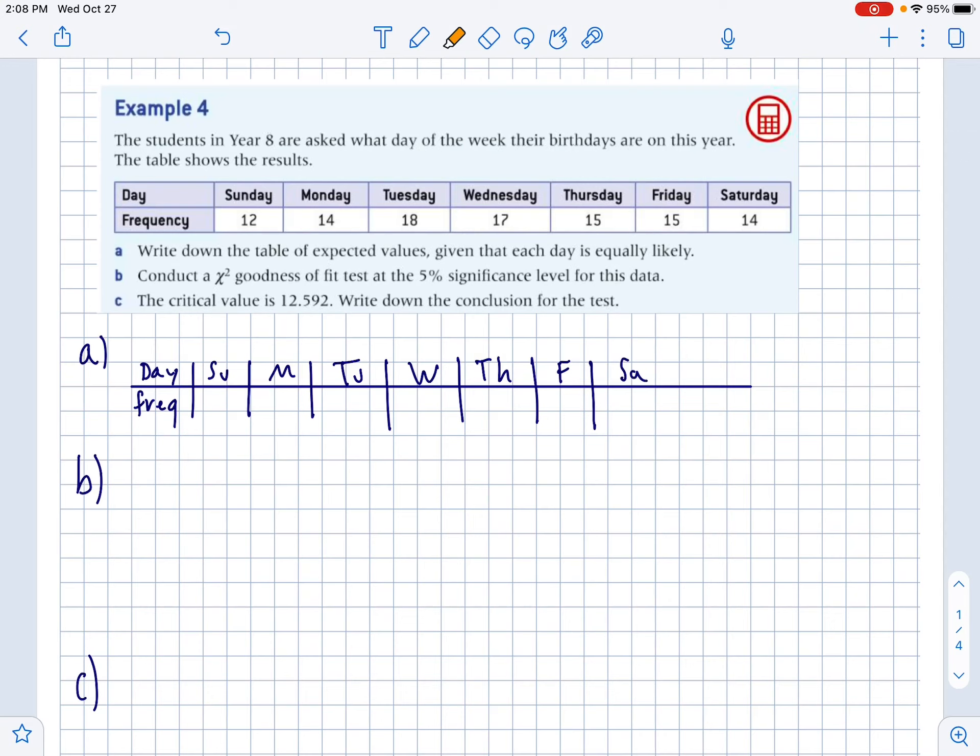So the chi-squared goodness of fit test is going to tell us basically if the data is abnormal enough that you would say they're not evenly distributed. It's not a uniform distribution. So part A, write down the table of expected values given that each day is equally likely. If you add all these numbers together and divide them by seven, there's 15 each that should be in those days. That's what we would expect for a uniform distribution.